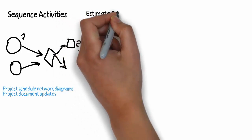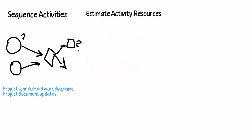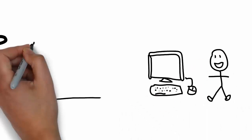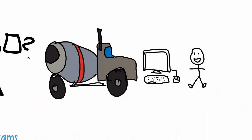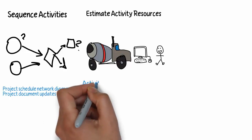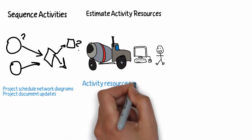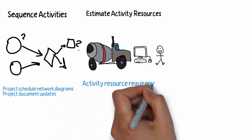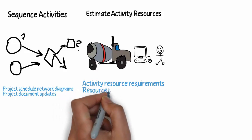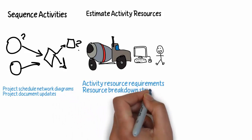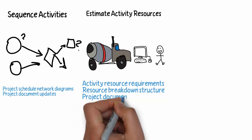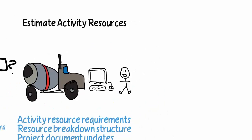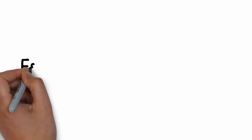We also have the process of Estimate Activity Resources — human resources, materials, and all the other types of resources we might need for our project. Our outputs include activity resource requirements and maybe even a breakdown structure of those resources, as well as updates to our other project documentation.